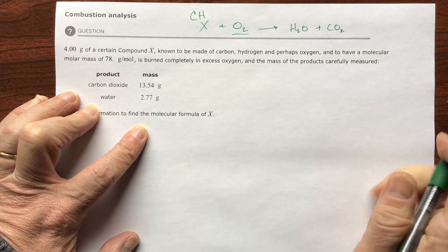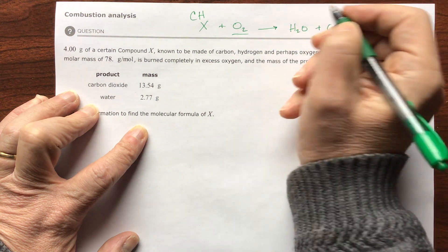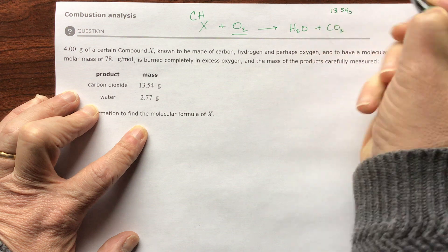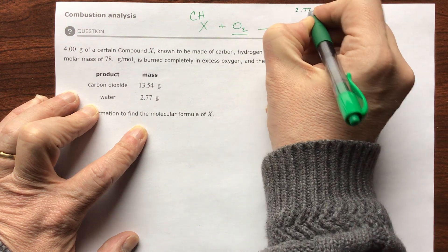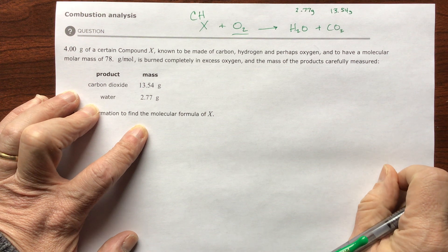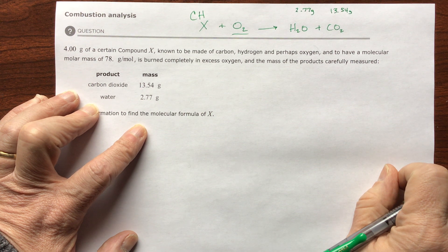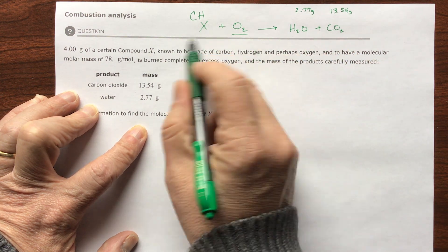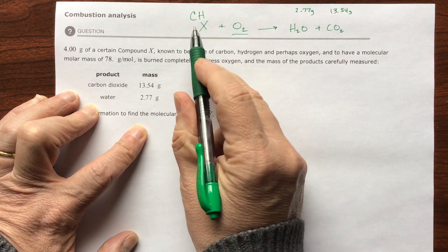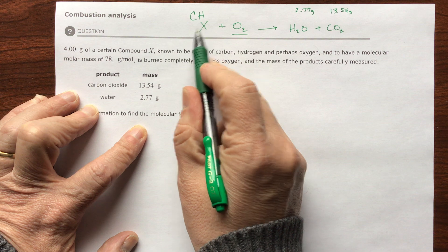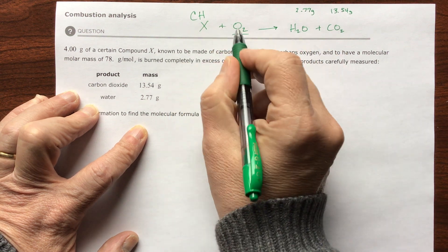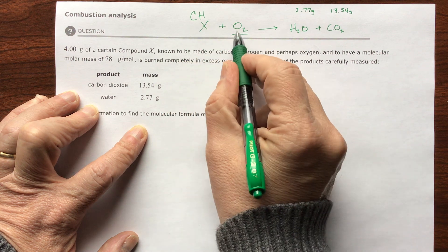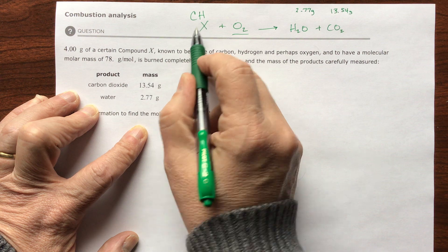The problem tells you that you're going to get carbon dioxide and water, and they tell you how much. You need to supply the information that it burns in air and the oxygen is O2. The carbon dioxide is 13.54 grams and the water is 2.77 grams.